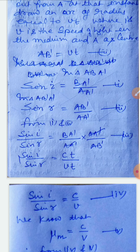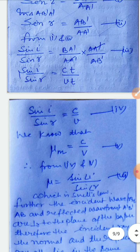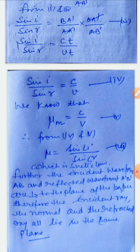Therefore, sin i / sin r = B-A' / A-B'. Substituting the values gives sin i / sin r = c / v. Since the refractive index μ = speed of light in vacuum / speed of light in the medium, we get μ = sin i / sin r, which is Snell's law — the law of refraction. Further, since the incident and refracted wavefronts are perpendicular to the plane of the paper, the incident ray, the normal, and the refracted ray all lie in the same plane. This proves the laws of refraction using wave theory of light.